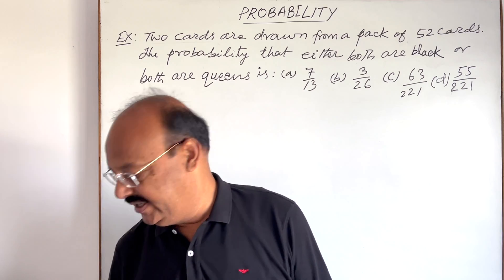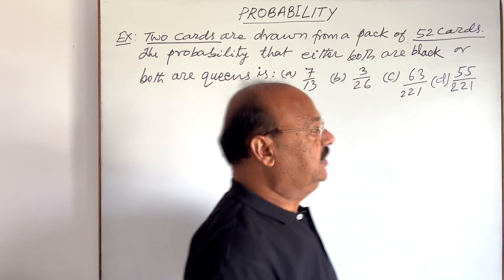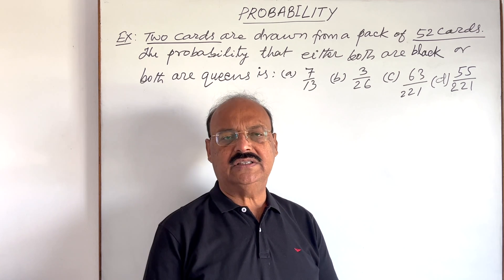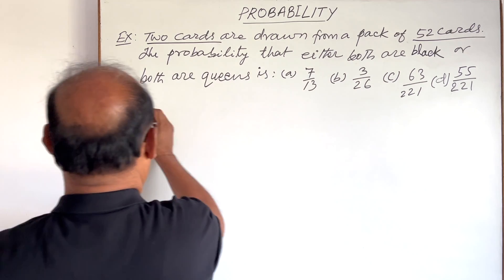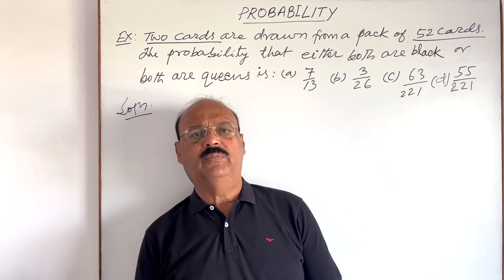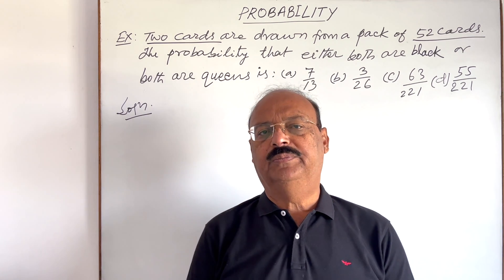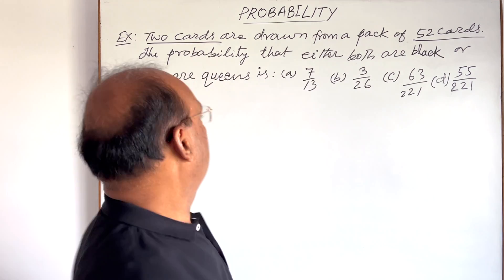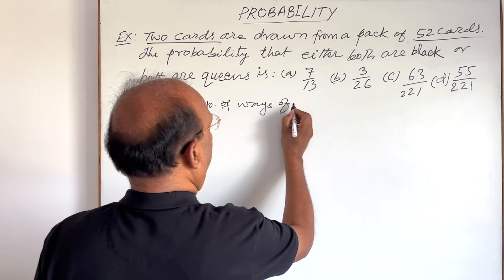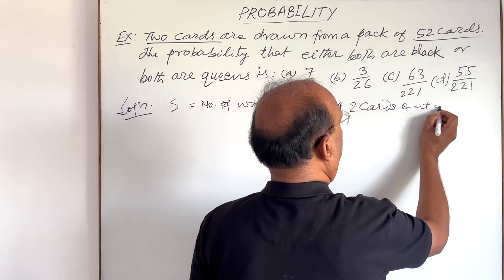So let us see how we can approach it. We have to draw two cards out of 52 cards. With the help of this information, first of all we will make the sample space and find out the number of elements in it. The sample space will consist of all the possible number of ways of getting two cards out of 52 cards, which is 52C2.